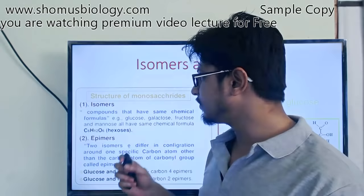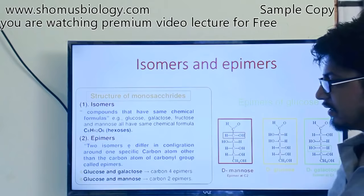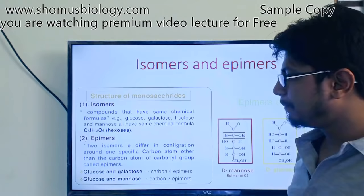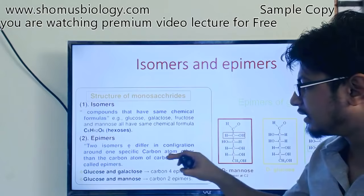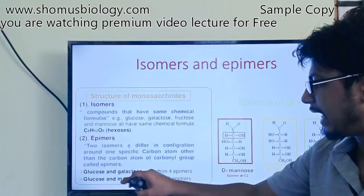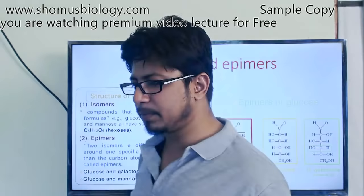Glucose, galactose, fructose, and mannose all share the same chemical formula C6H12O6. Epimers are two isomers that differ in configuration around one specific carbon atom — specifically, any carbon other than the carbonyl carbon. Glucose and galactose are epimers at carbon number 4, while glucose and mannose are epimers at carbon number 2.